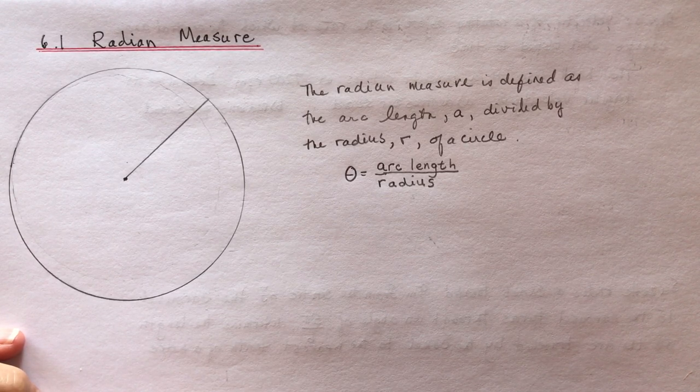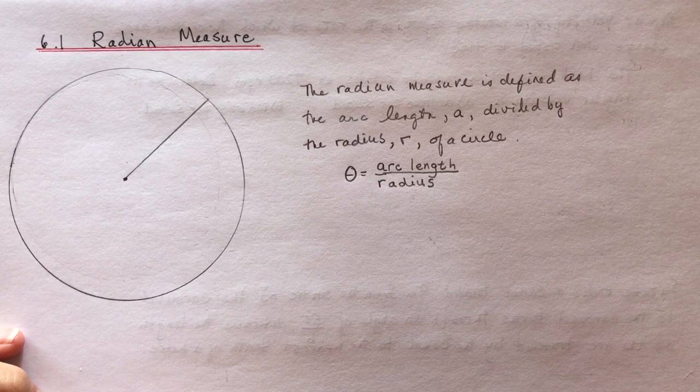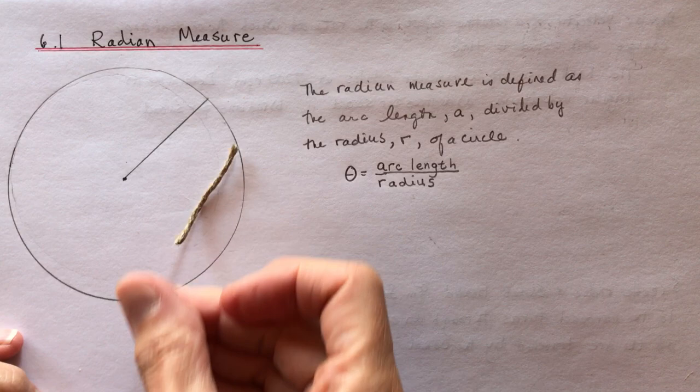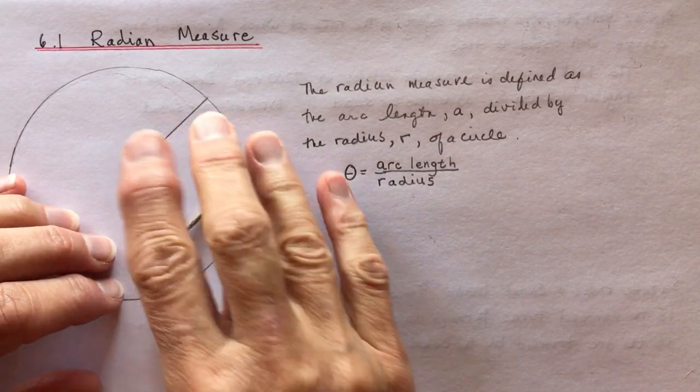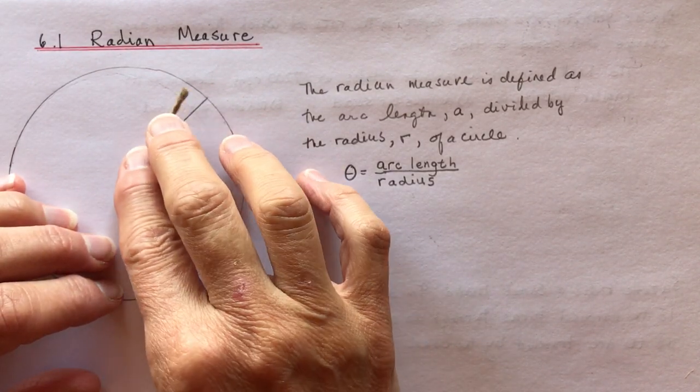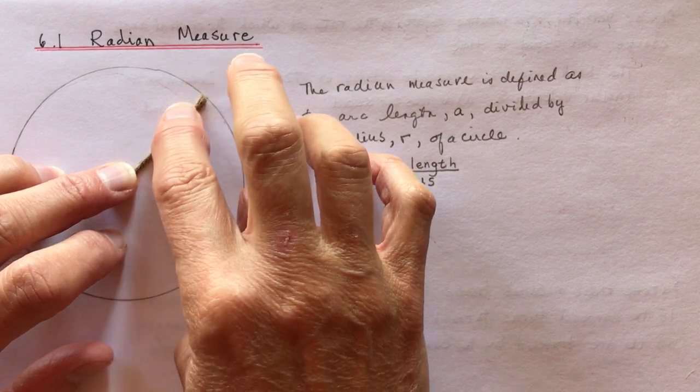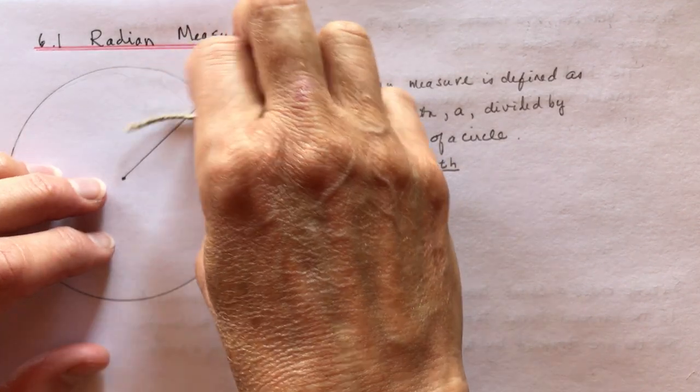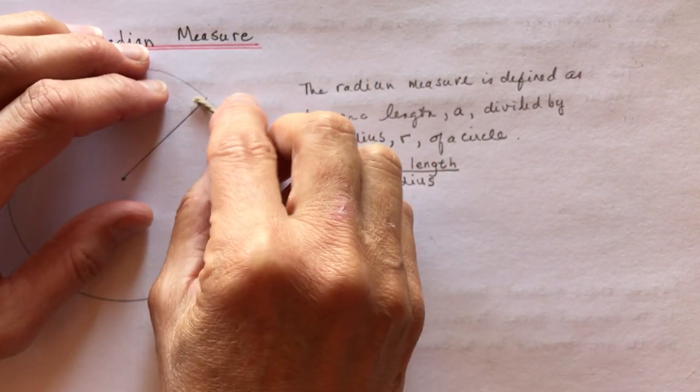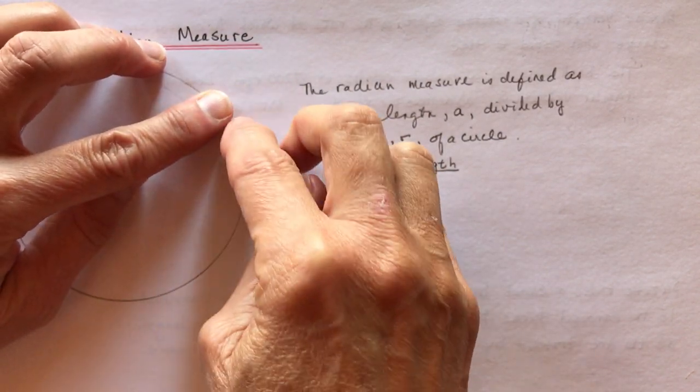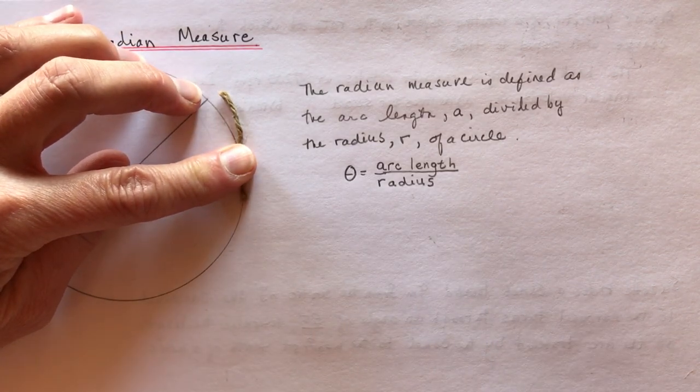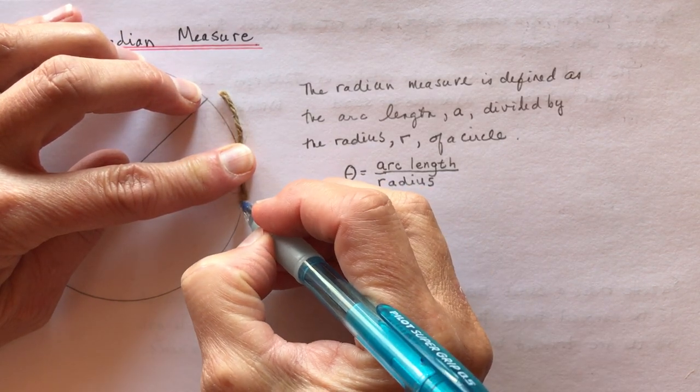What I usually do is I get my students to draw a circle of any size, and I give them a piece of string. I tell them to measure the length of their radius. So you cut a piece of string the length of the radius, be as exact as you can. Then you put the tip here and follow your string around and find where it's going to end.